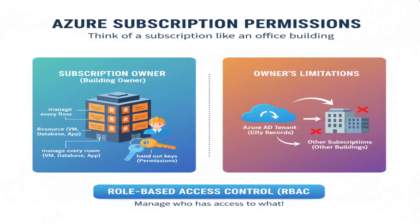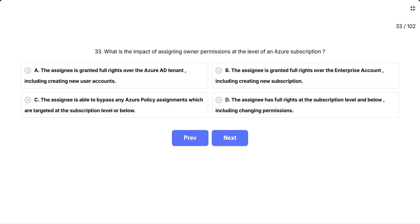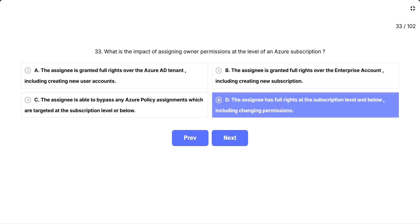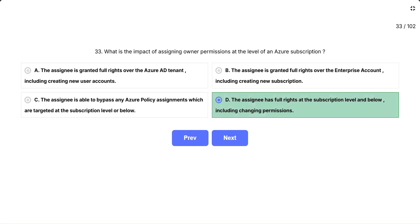Think of a subscription like a whole office building. Making someone owner of the building lets them manage every floor — resource groups — and every room — resources. They can also hand out keys — permissions. But they can't control city records — the Azure AD tenant — or other buildings — other subscriptions. The correct answer is: the assignee has full rights at the subscription level and below, including changing permissions.